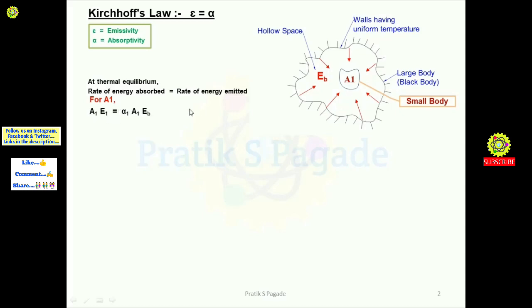The rate of energy absorbed is given by alpha1 × A1 × eb, where alpha1 is the absorptivity of body 1, A1 is the area of body 1, and eb is the emissive power of the black body which is absorbed by the small body. The rate of energy emitted by the small body is given by A1 × e1, where A1 is the area of the small body and e1 is the emissive power of this small body.